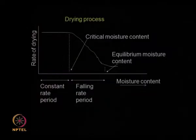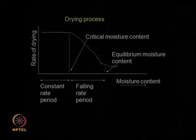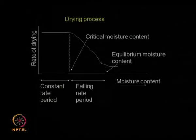We have been talking about the concept of drying and how important it is. The most important picture in the drying process has moisture content on the x-axis and rate of drying on the y-axis. Initially, there is plenty of water present on the surface of the solid, and drying takes place as the solvent starts evaporating. The drying rate is constant — that is why this is called the constant rate drying.